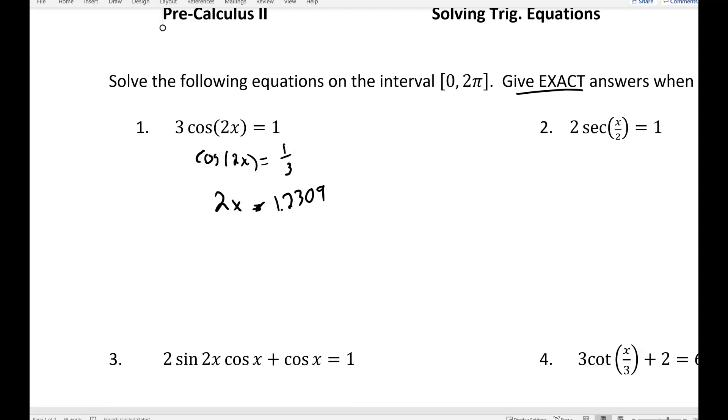So now we're not done, because that tells us what 2x is equal to, and we actually want to know what x is equal to. So we know for sure that if we divide both sides by two, we'll get one of our answers. So we know that x has to be approximately equal to 0.6154. Now, how do we find the other ones?